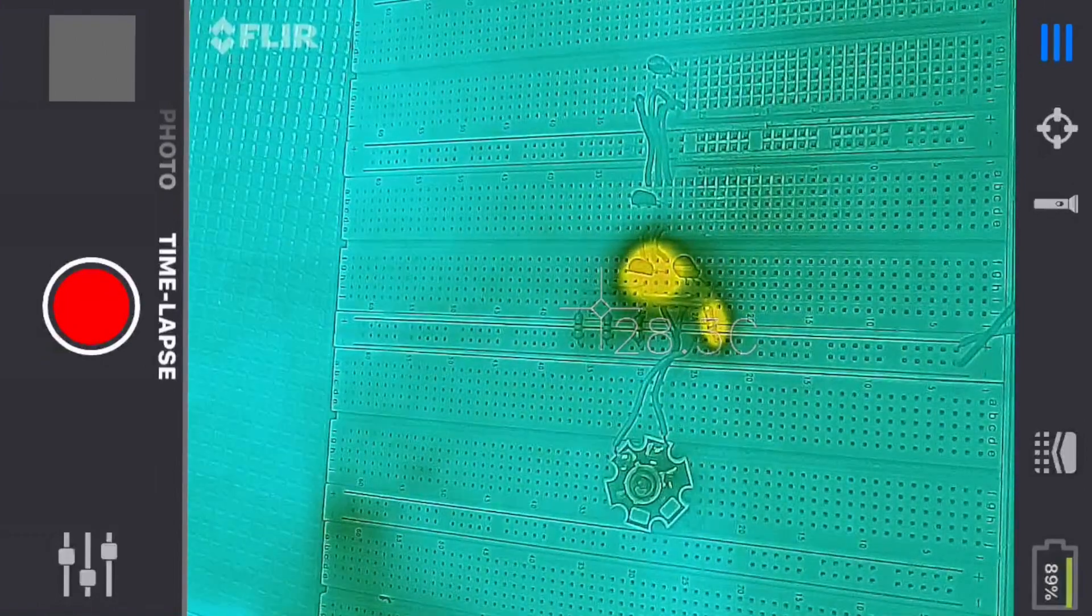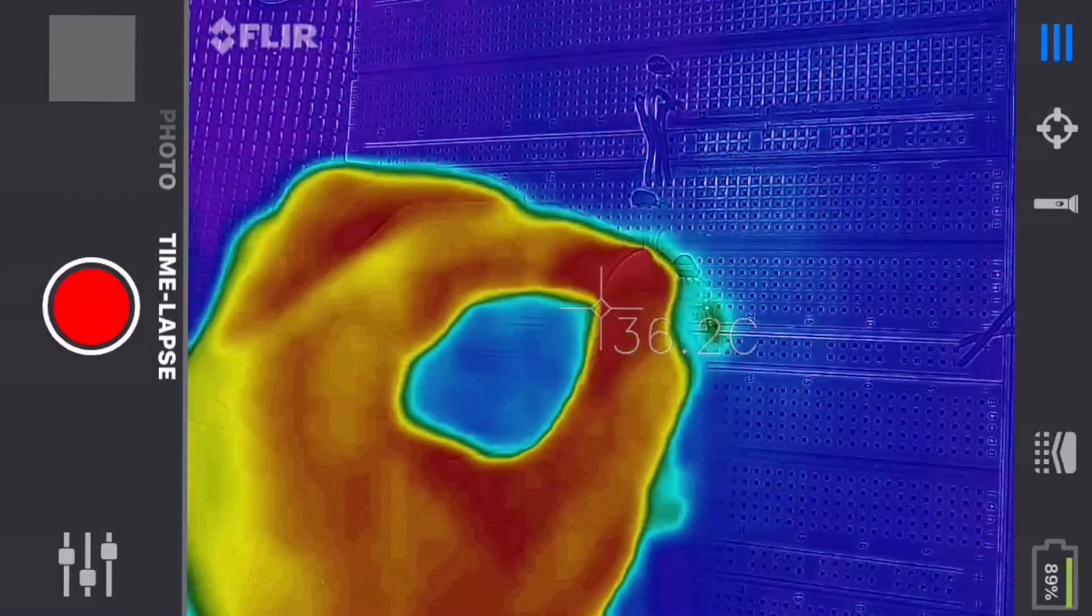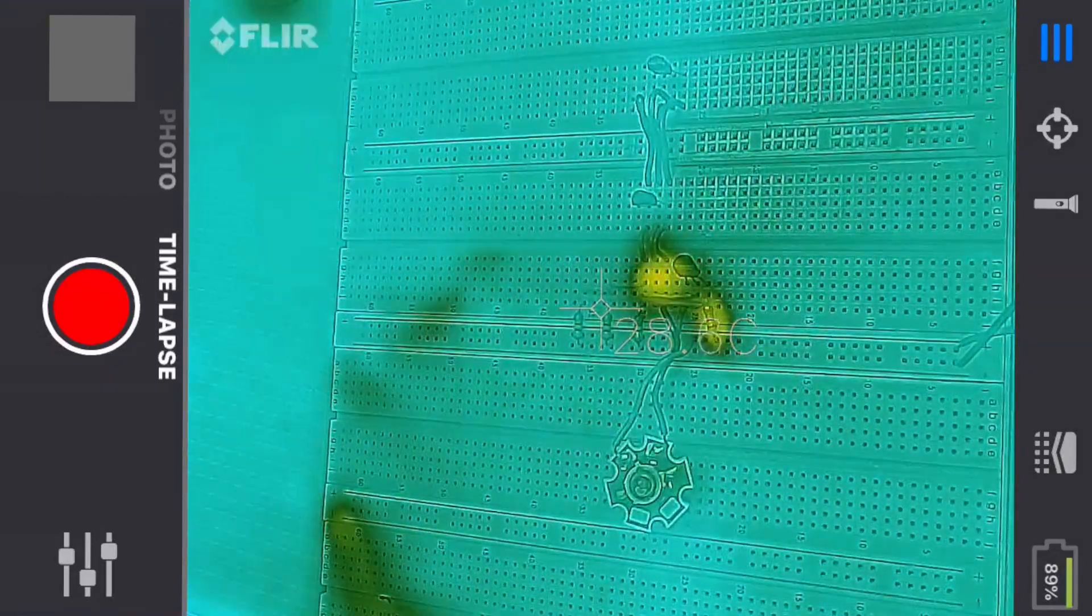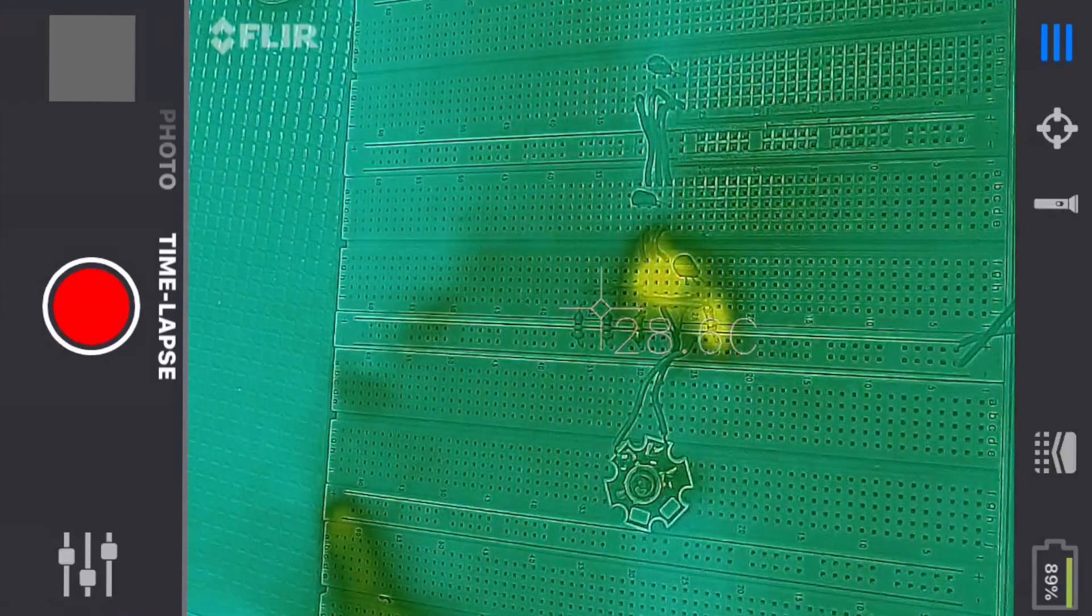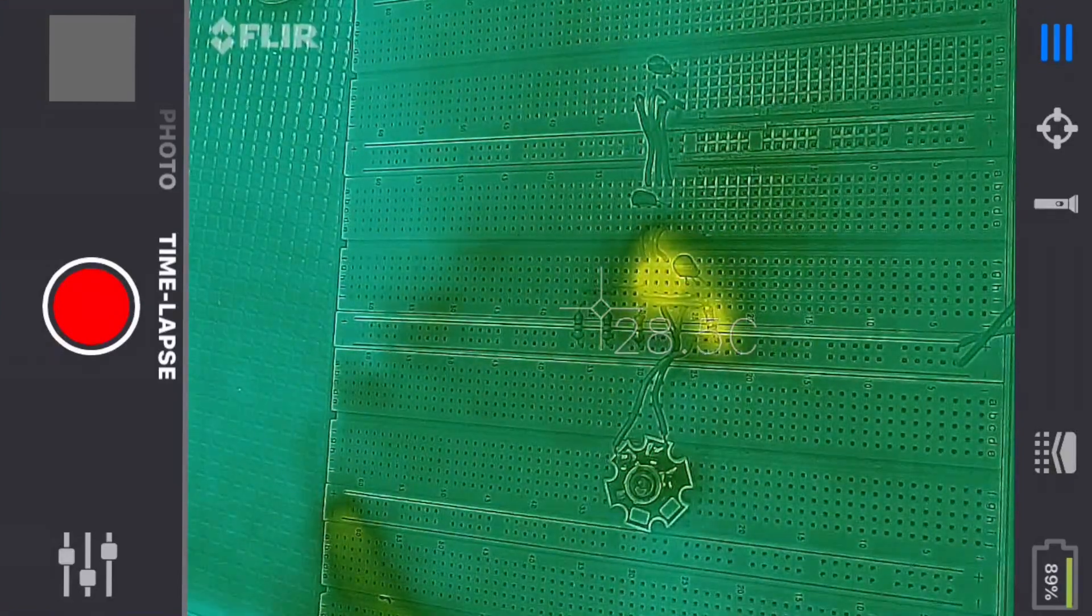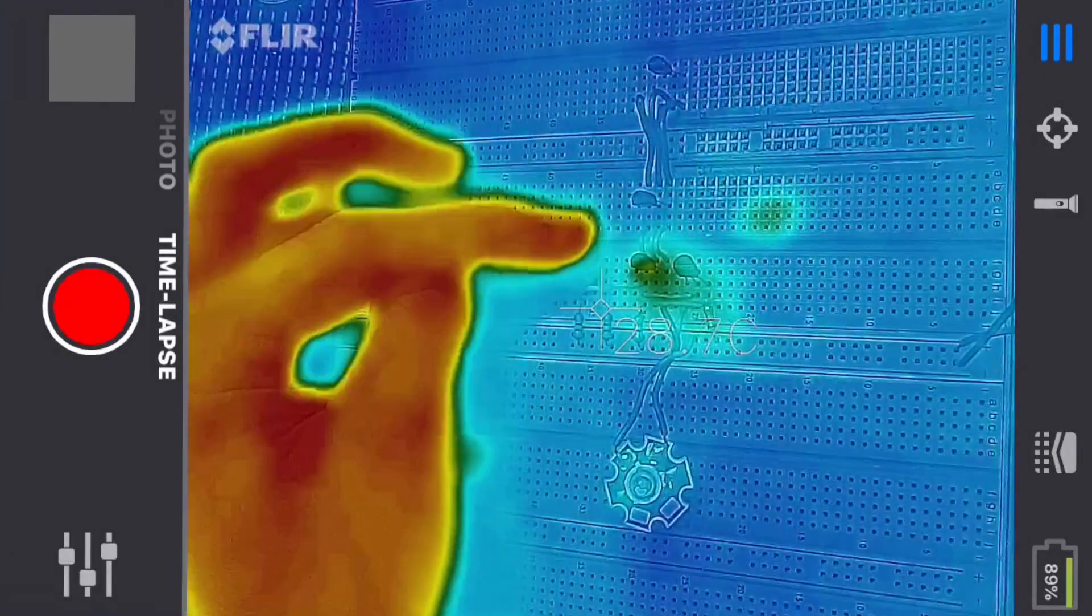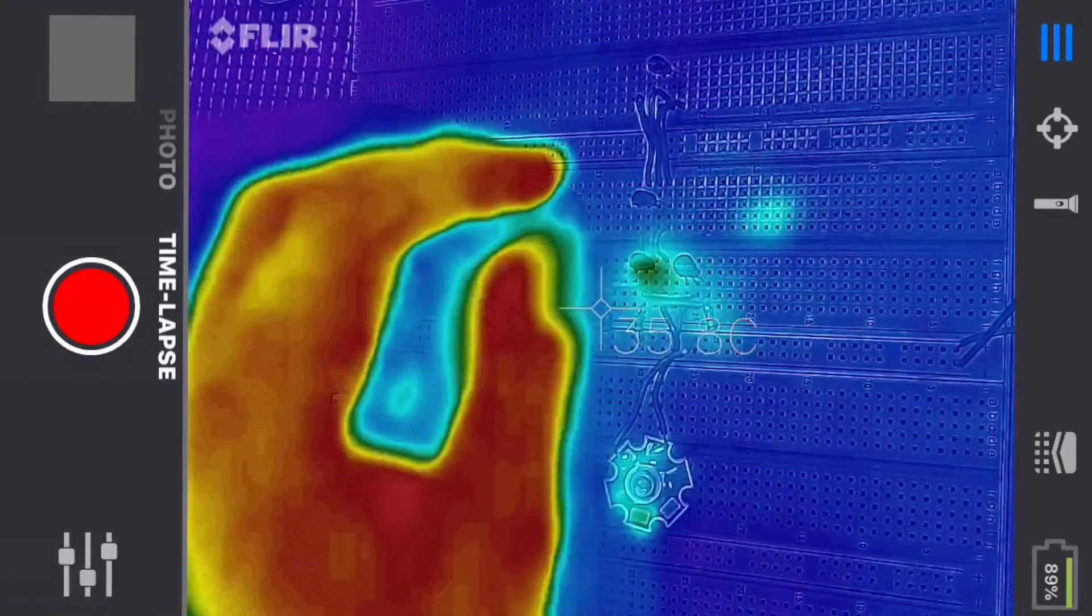And then what I'm going to do now. So you saw the first one had the thermal runaway condition. Now what I'm going to do is just pull that one out of the circuit. And I'm going to get a fresh transistor because that one's really hot. And I'm going to put another one in there real quick here.